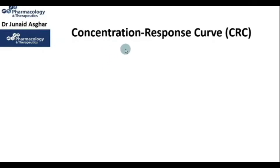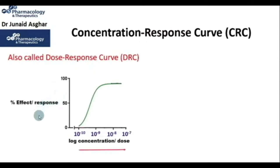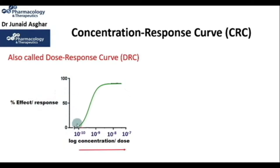Let's start with the concept of concentration response curves, also called dose response curves. We normally plot various concentrations or doses of an agonist on the x-axis and the resulting effects or responses in terms of percentage on the y-axis, and it results in a dose response curve.